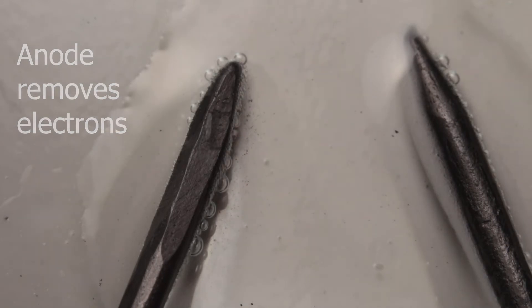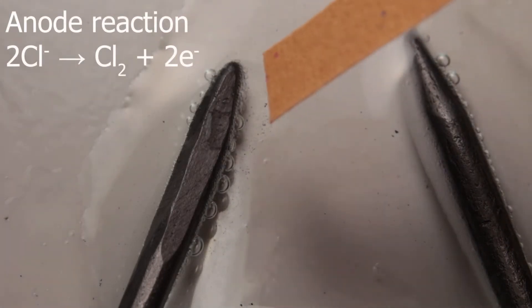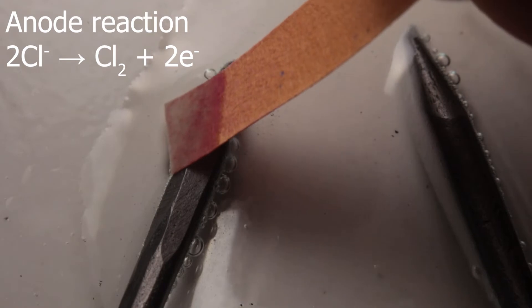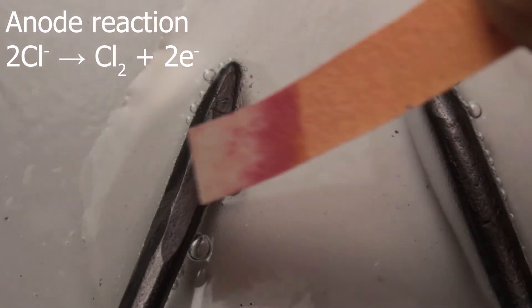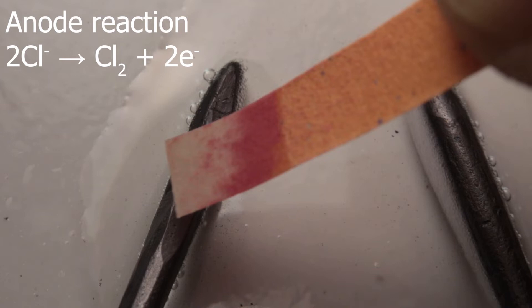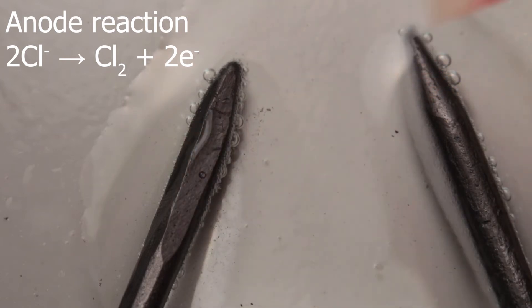At anode, removal of electrons would take place. Here chloride ions are being oxidized and chlorine gas is formed. The test for chlorine gas is bleaching of indicator paper, which you can see here.